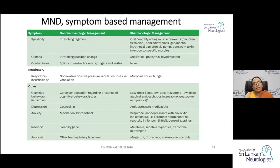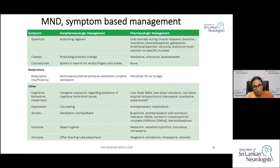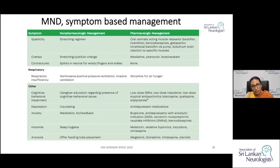Spasticity can be managed with muscle relaxants such as baclofen or tizanidine. Importantly, beyond motor manifestations like wasting, weakness, spasticity, and cramps, it is essential to address the psychological issues of patients — which are common in this condition — as part of a symptom-based approach aimed at improving quality of life.